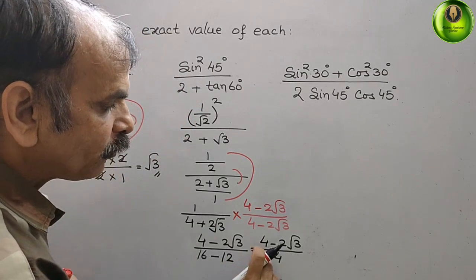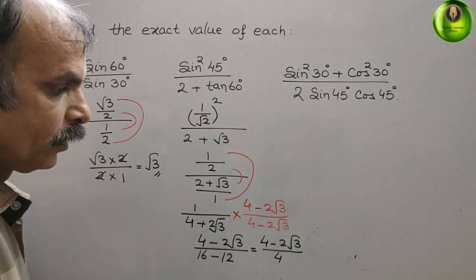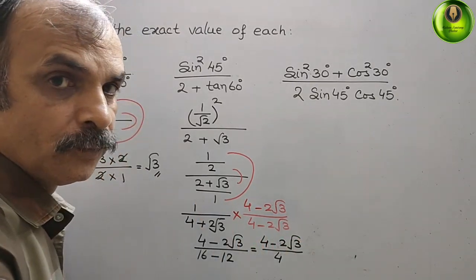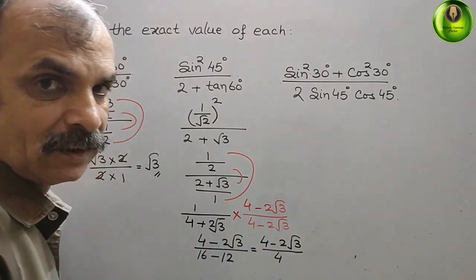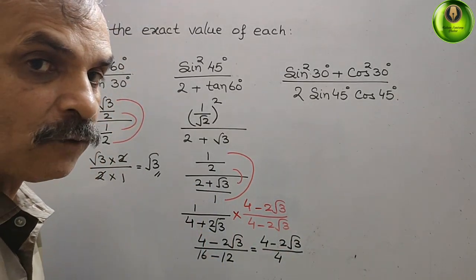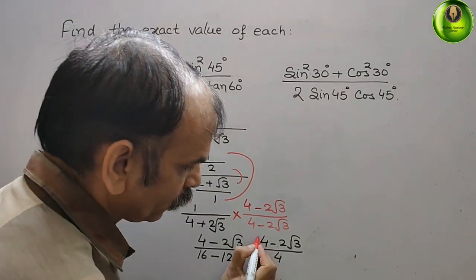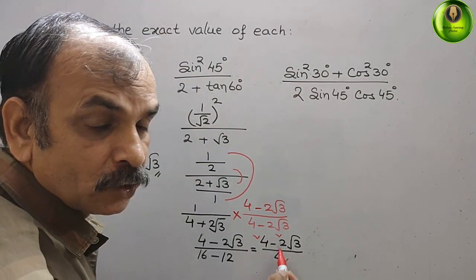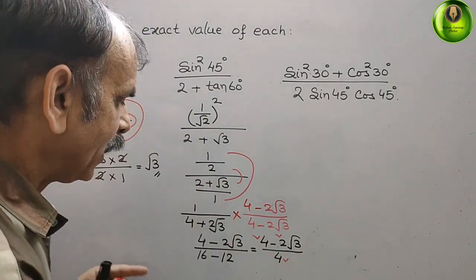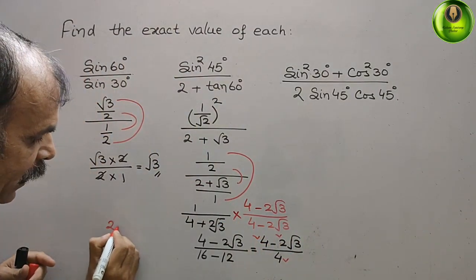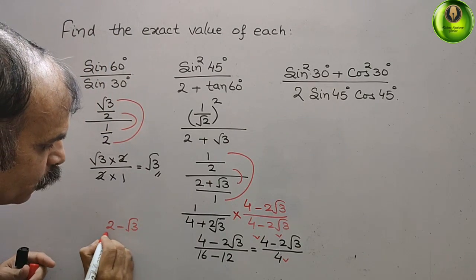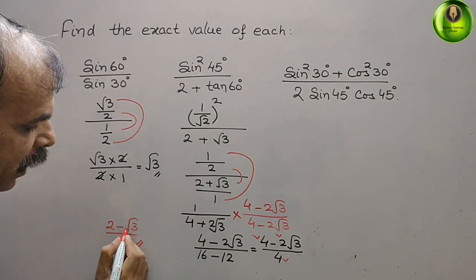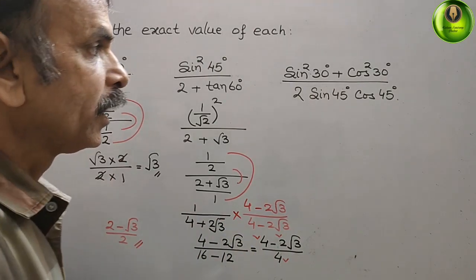Now we have to split it. So here it will come as 4 by 4 minus 2 root 3 by 4. To simplify, we see the common factors of all three terms — 4, 2, and 4 — 2 is common. So we divide by 2, and we get 2 minus root 3 by 2. So the answer for this part is 2 minus root 3 by 2.